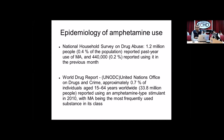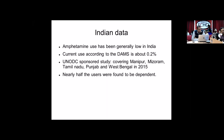Coming to the epidemiology of amphetamines, there has been very little data from India — actually no data, at least until recently. The primary data comes from Australia, Japan, the Americas, and Europe. The National Household Survey on Drug Abuse reported about 1.2 million people — 0.4% of the population. The World Drug Report reported approximately 0.7% of individuals aged 15 to 64 worldwide using an amphetamine-type stimulant in 2010, with methamphetamine being the most frequently used. Indian data has been generally low at about 0.2% current use. A UNODC-sponsored study covering Manipur, Mizoram, Tamil Nadu, Punjab, and West Bengal noted that nearly half the users of amphetamines were found to be dependent.